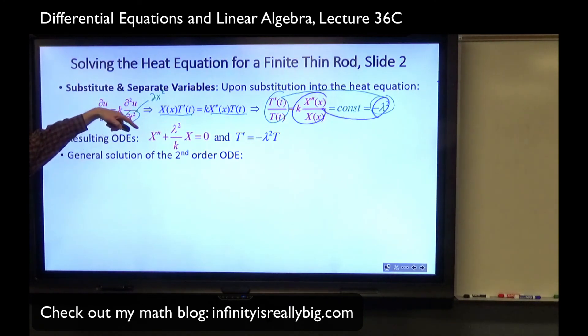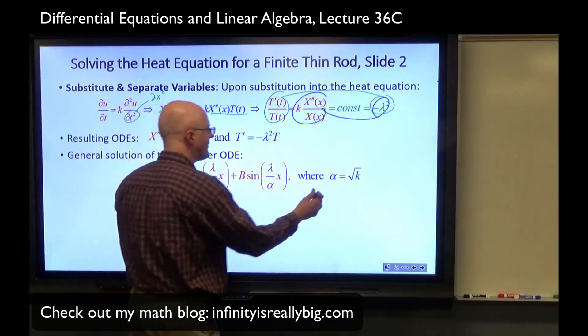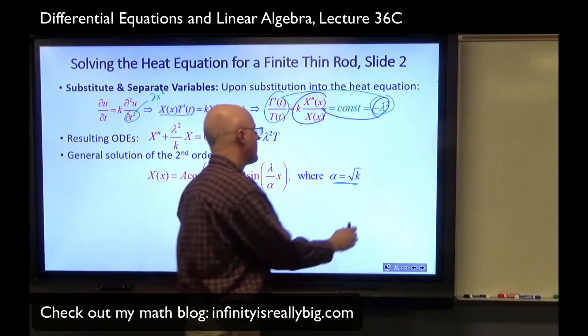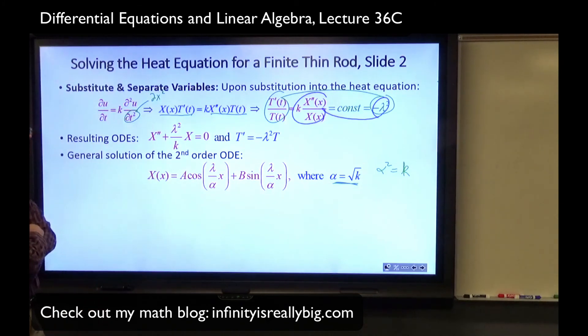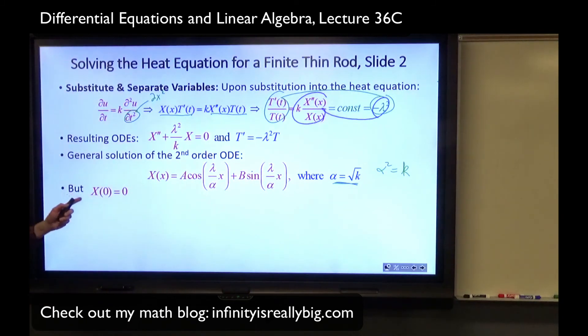Yeah, the general solution to this, the red equation here, a second-order ODE, is a linear combination of cosine and sine of this form. Notice this is a function of little x, not t, where alpha is square root of lambda squared over k here. I could have written square root of k in both spots, but it's nicer to write alpha. Alpha squared would be equal to lambda squared over k, therefore, as well. Check it. Go ahead and check it.